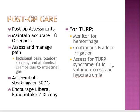TURP syndrome is caused by the absorption of irrigating fluids during and after surgery, and if untreated it can lead to seizures and arrhythmias. It may also cause decreased hematocrit, hypertension, bradycardia, nausea, and confusion.